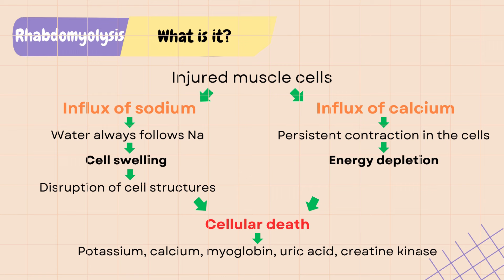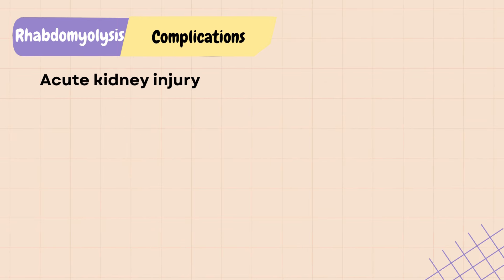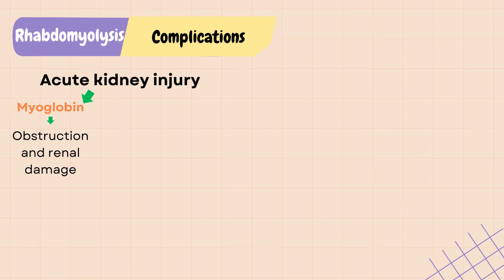This results in cellular death, and cell contents such as potassium, calcium, myoglobin, uric acid, creatine kinase, and other materials enter the bloodstream. This can lead to several complications. Acute kidney injury is the most common complication of rhabdo. Myoglobin, a byproduct of muscle cell death, is an iron-oxygen carrying protein that can cause obstruction and renal damage.